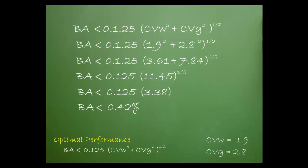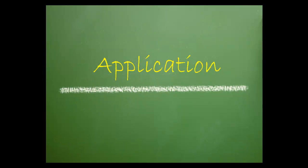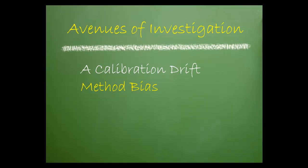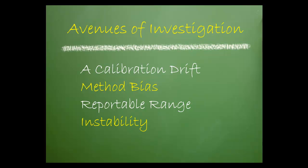Now that you've established an SEA, let's talk about practical application. If you experience results that fall outside of your bias goal, here are some possible avenues of investigation. Be on the lookout for calibration drift. Look for method bias — this is bias attributed to unsatisfactory laboratory performance. Also consider reportable range error or a miscalculated mean. Instability errors are related to materials, instrument performance, instrument components, or proper maintenance.